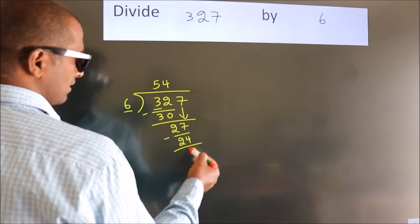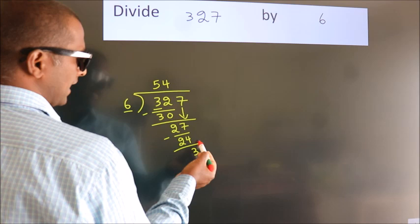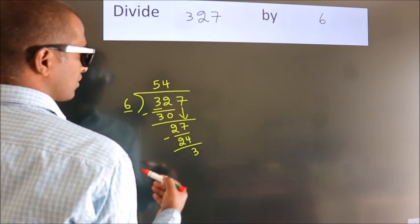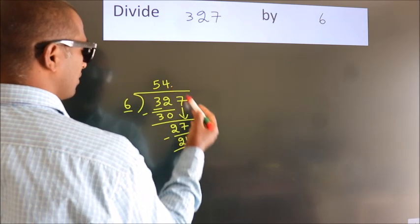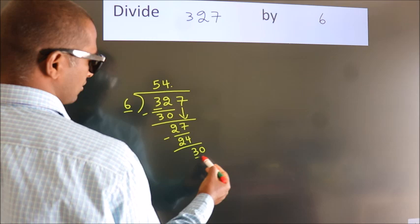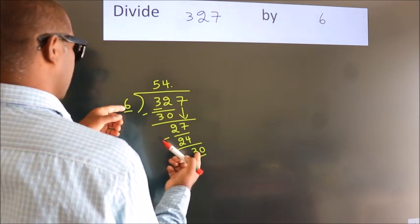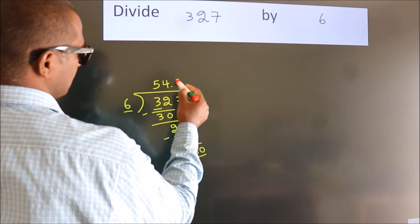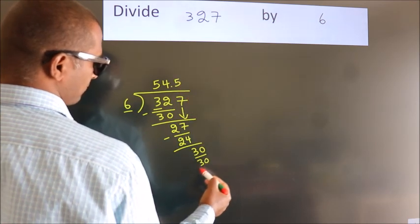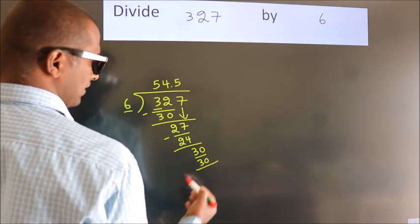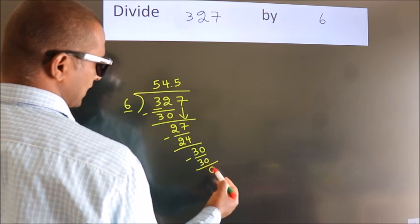After this, no more numbers to bring it down. So what we do is we put a dot and take 0. So 30. When do we get 30 in the 6 table? 6 fives, 30. Now we subtract. We get 0.